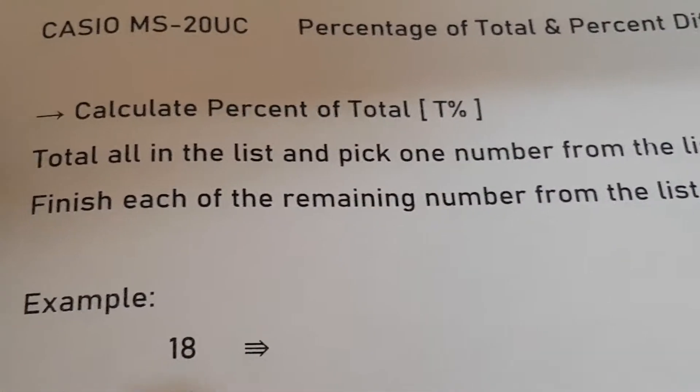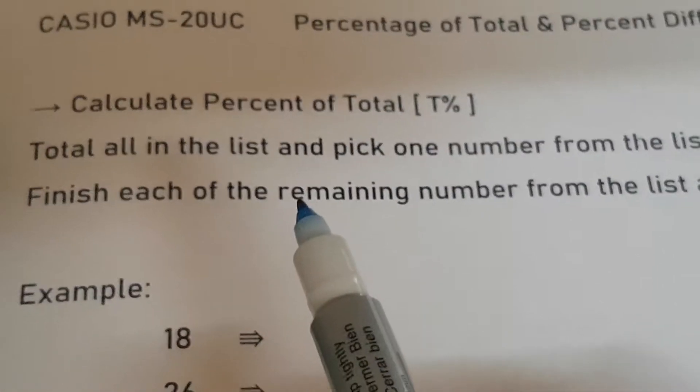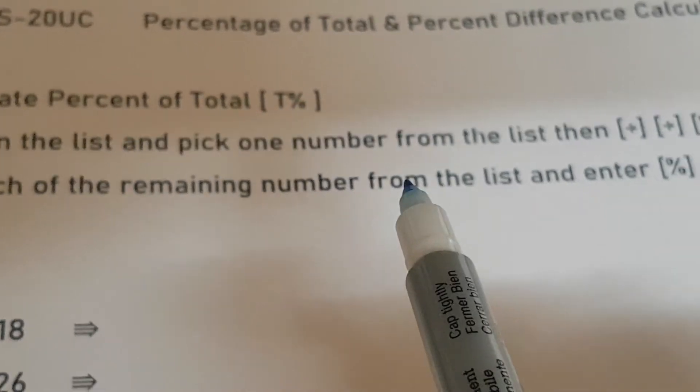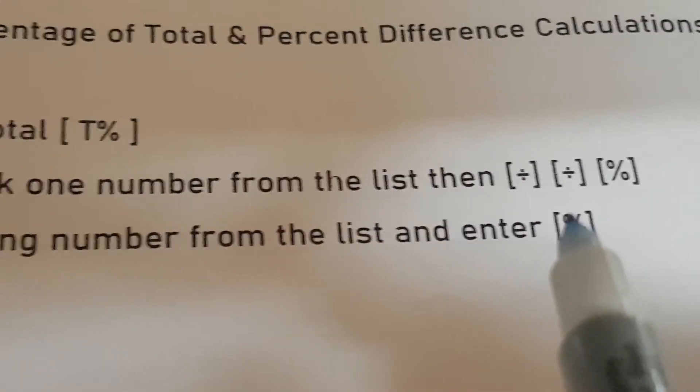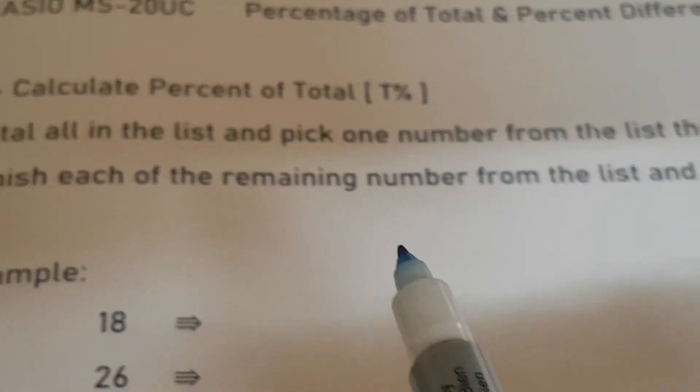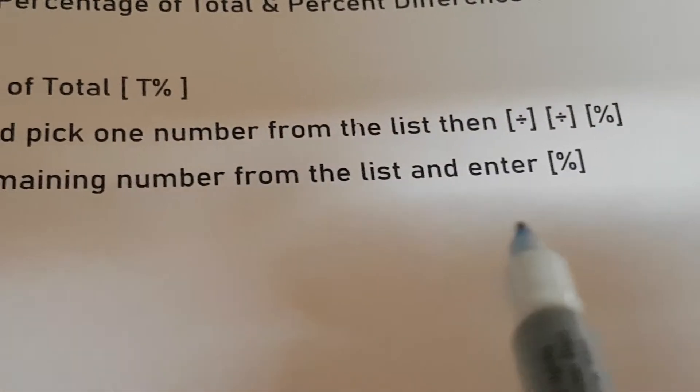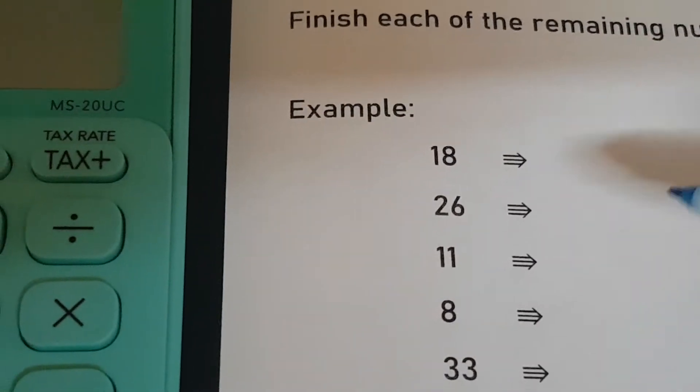To calculate percentage of total, total all in the list and pick one number from the list, then press Y-D-Y percent. Finish each of the remaining numbers from the list and enter percent.